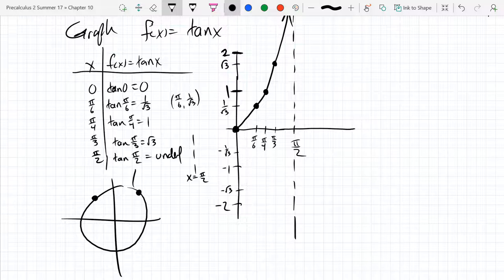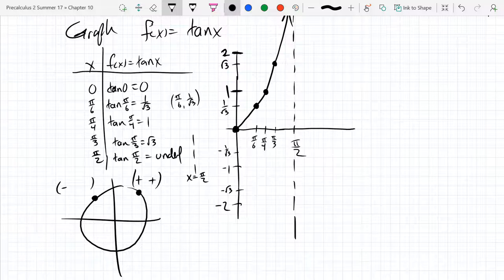So what's different between first and second quadrant? Here we had positive, positive. Over here second quadrant we go negative, positive. So basically we're going to have negative values.